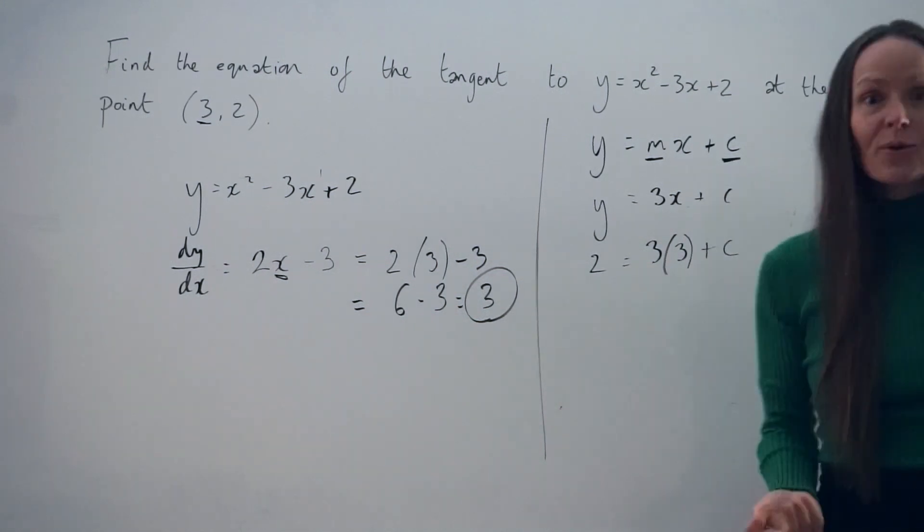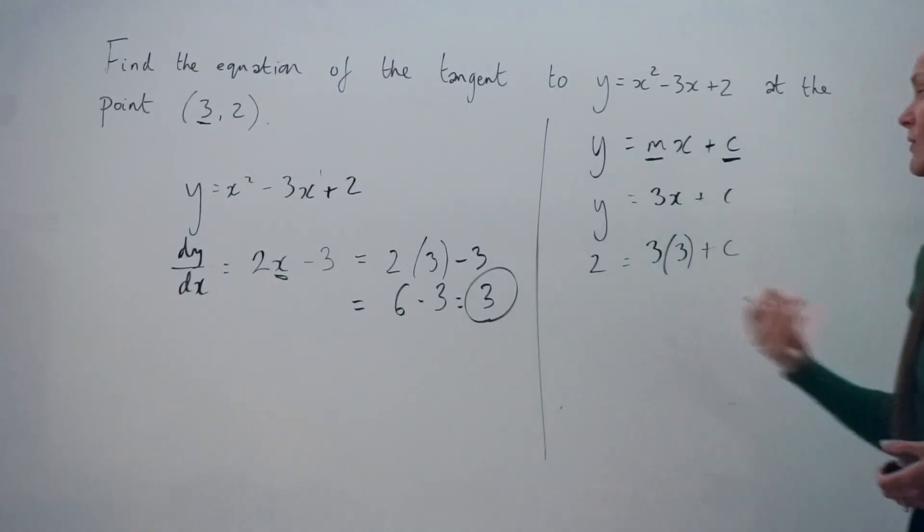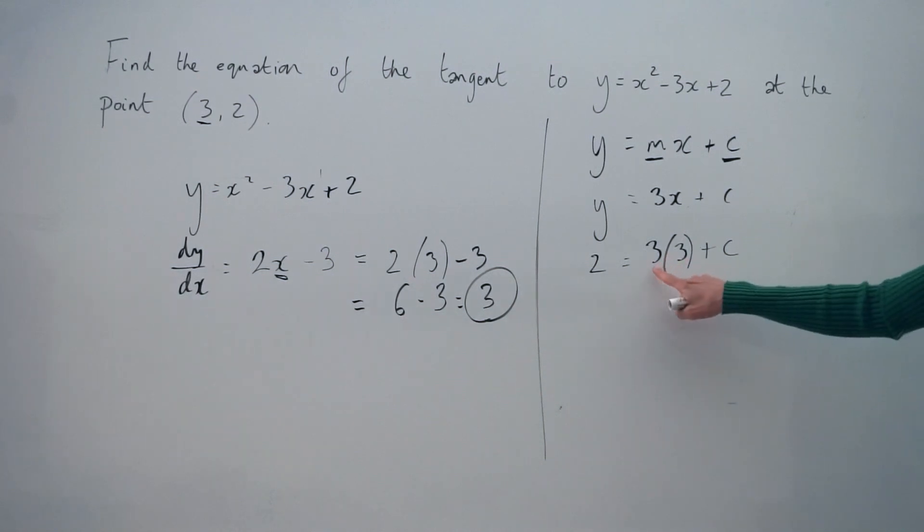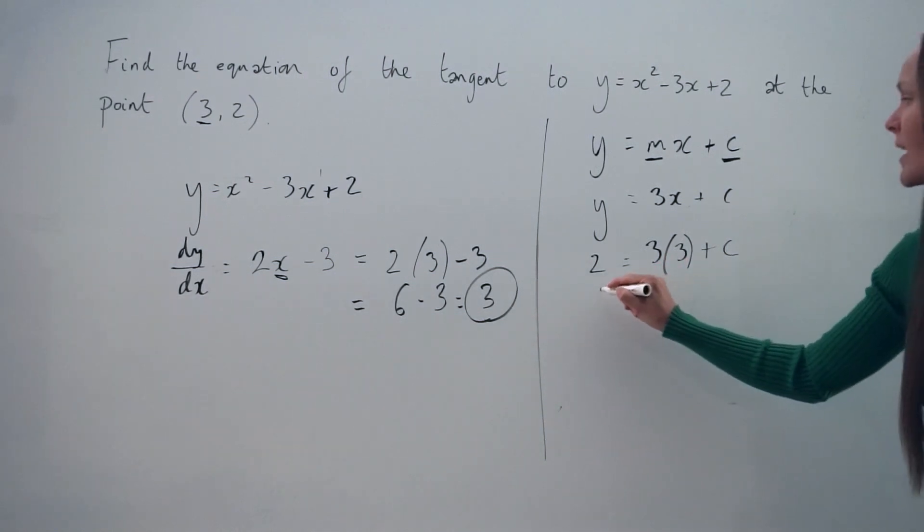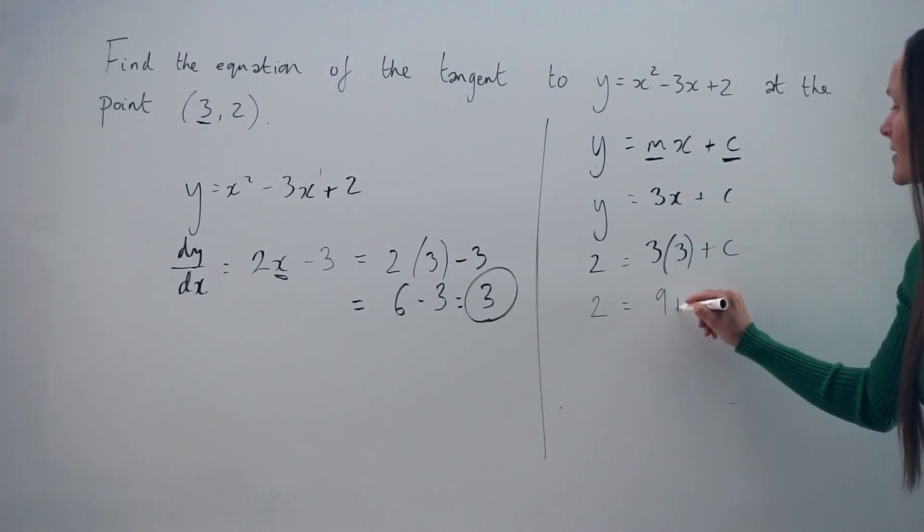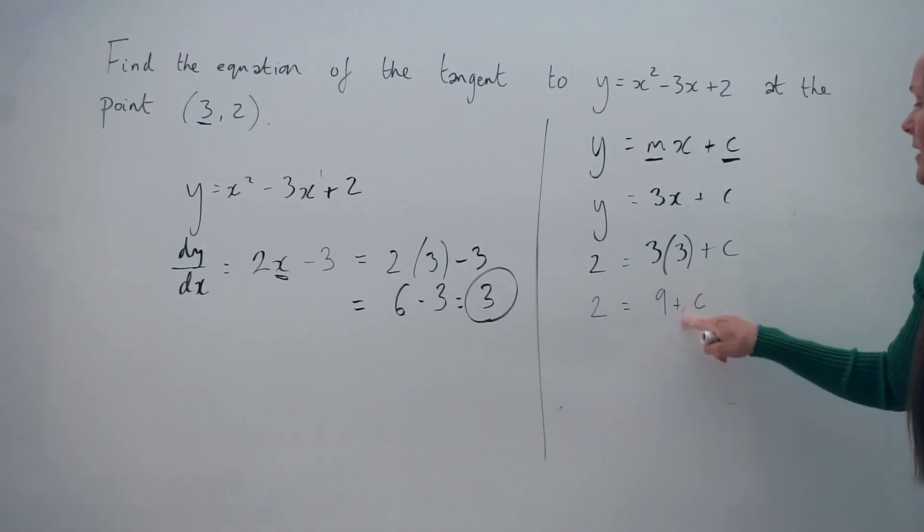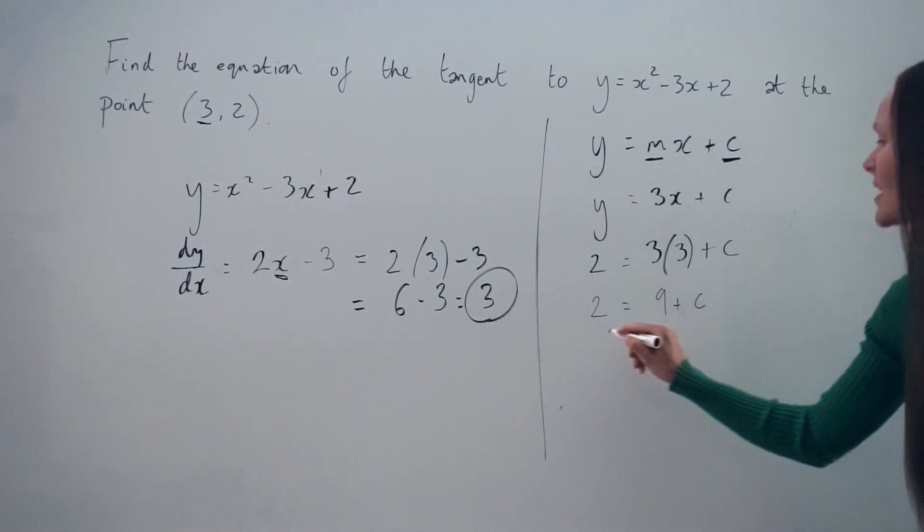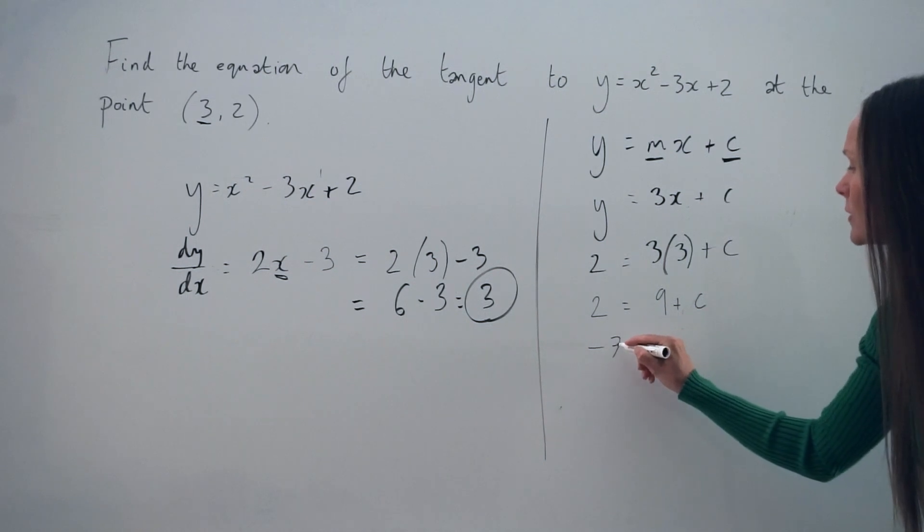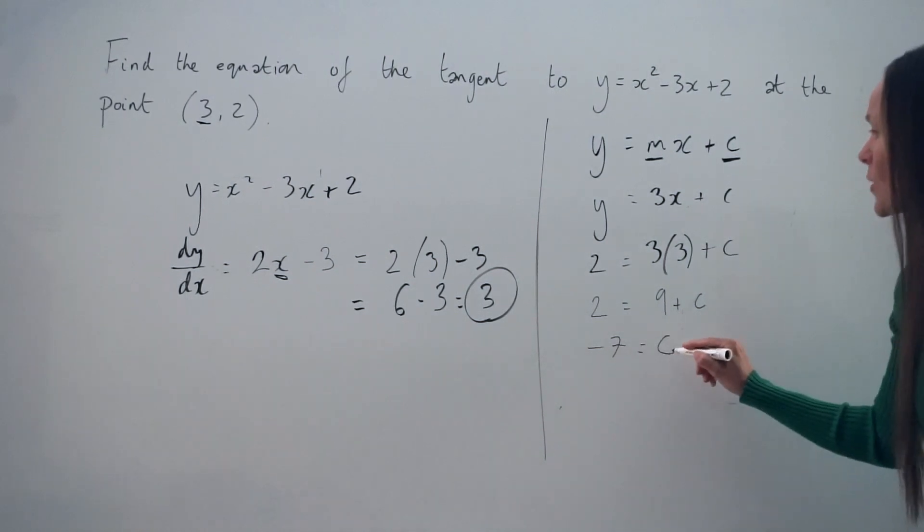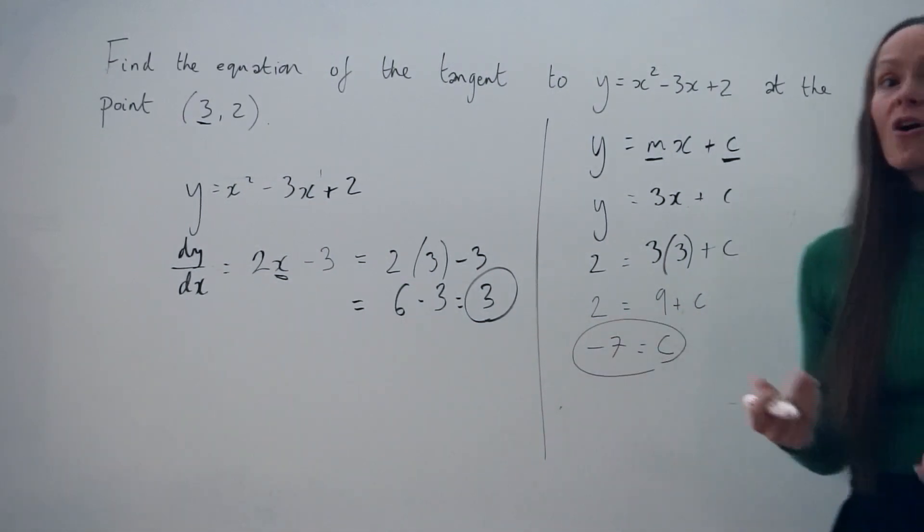So I'm going to replace the y-value with positive 2 and the x-value with positive 3. And from here, we can solve the equation to find c, which will give us the y-intercept. So 3 times 3 is 9. So we have 2 is equal to 9 plus c. Then if I subtract 9 on both sides, I have negative 7 is equal to c. So there is the y-intercept of the tangent.